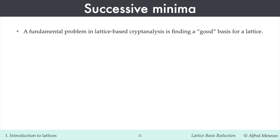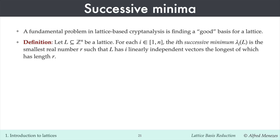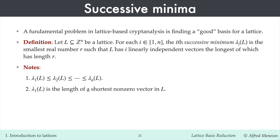A fundamental problem in lattice-based cryptanalysis is finding a good basis for a lattice. A useful concept for determining the quality of a lattice basis is the successive minima. Let L be an n-dimensional lattice. For each i between 1 and n, the i-th successive minimum of L, denoted λi(L), is the smallest real number R such that L contains i linearly independent vectors (over the real numbers) the longest of which has length R. The successive minima form a non-decreasing sequence of real numbers. The first successive minimum, λ1, is the length of a shortest non-zero lattice vector.